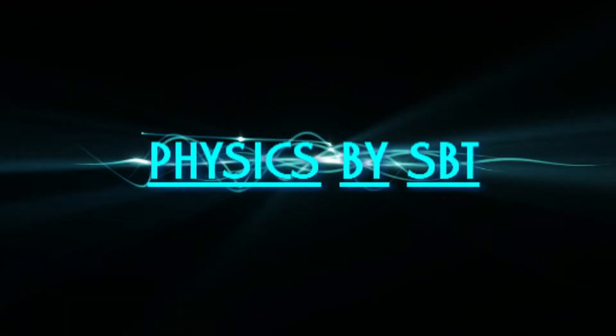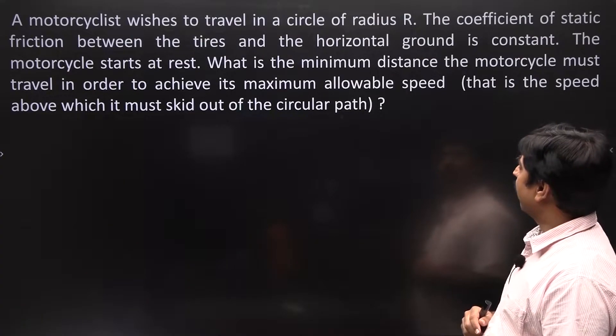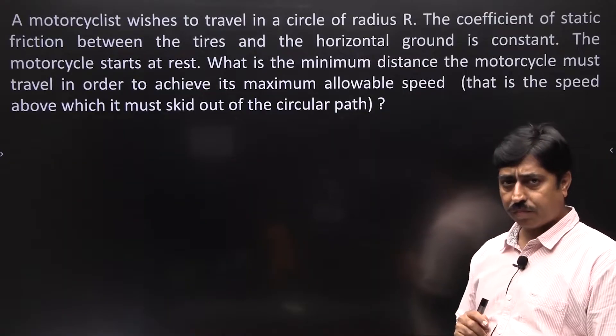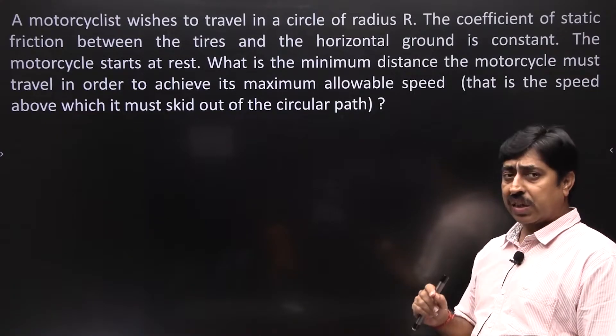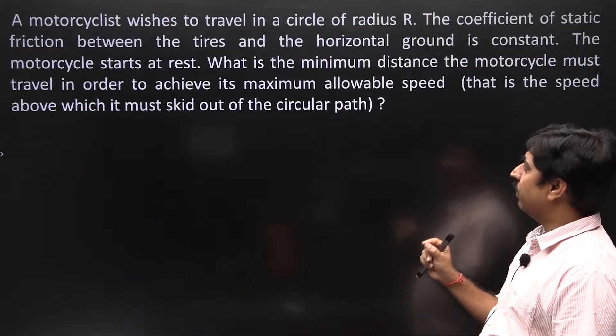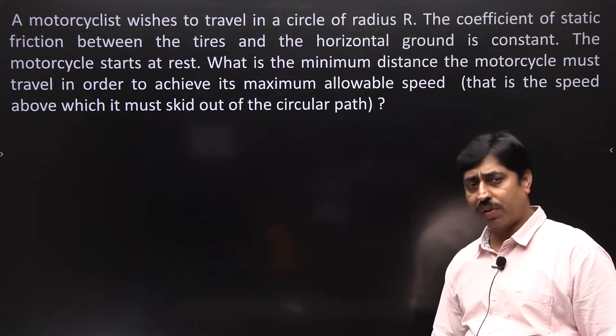Hello students, today we will solve a question from mechanics in which even if you understand the physical concepts very well, the mathematics part might get very tricky. Here is the problem: a motorcyclist wishes to travel in a circle of radius r, and the coefficient of static friction between the tires and the horizontal ground is constant. The motorcycle starts at rest — what is the minimum distance it must travel to achieve its maximum allowed speed, above which it will skid out of the circular path?